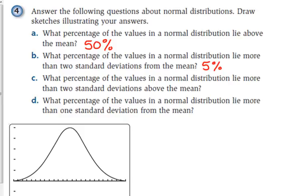What percentage of the values in a normal distribution lie more than two standard deviations above the mean? Be careful. Lie above more than two standard deviations above. We change the word from to above. So what does that change?